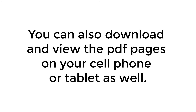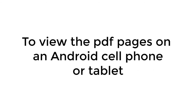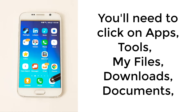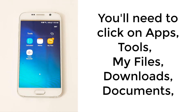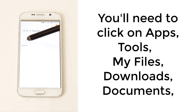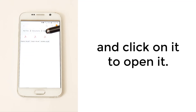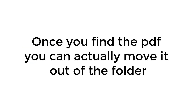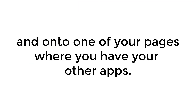You can also download and view the PDF pages on your cell phone or tablet. To view the PDF pages on an Android cell phone or tablet, you'll need to click on apps, tools, my files, downloads, and click on documents to find the PDF and click on it to open it. Once you find the PDF, you can actually move it out of the folder and onto one of your pages where you have your other apps.